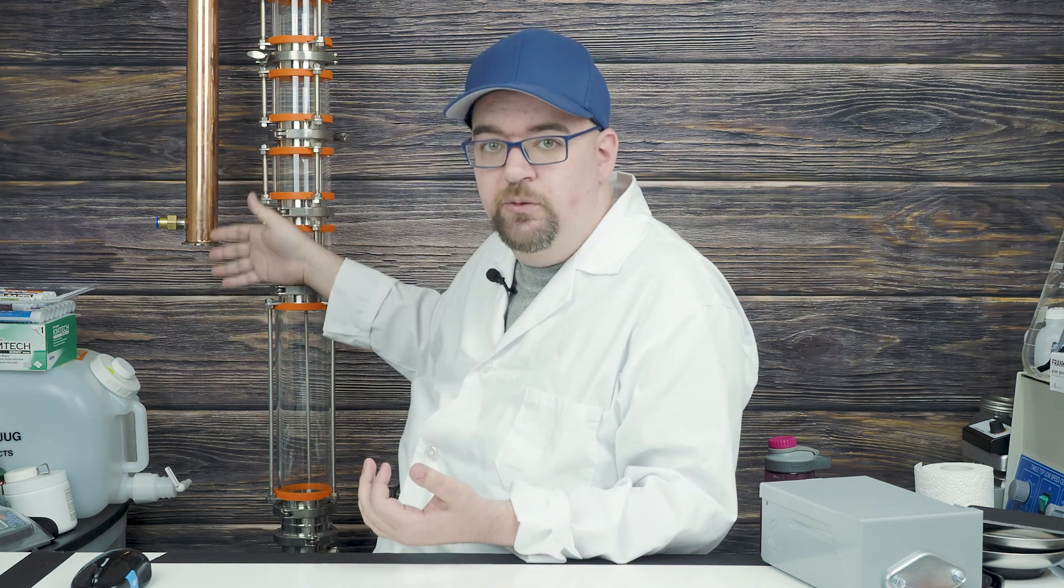I say you should really only use the PID if you're trying to get a neutral spirit and you have a tall packed column, so if this was all packed with copper. So you could set the temperature to 75 degrees and toss out everything you collect.